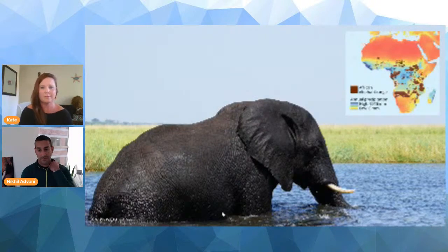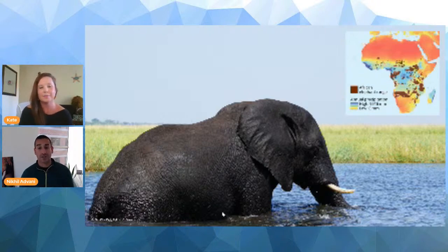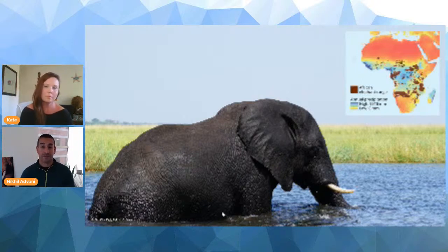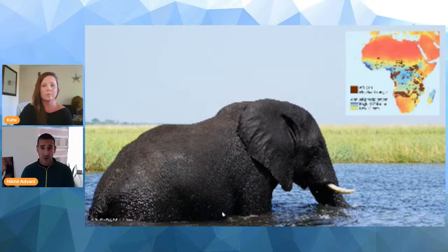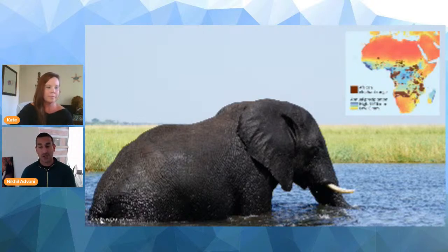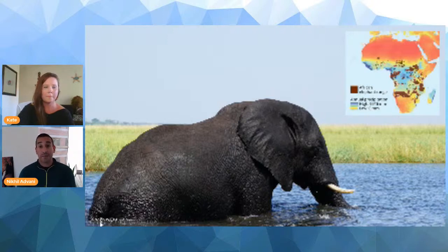Drought is also a problem for species with very high water requirements, like elephants. Elephants need 150 to 300 liters of water a day just for drinking, and when rainfall declines they can actually die from lack of water. They also don't have enough food because the vegetation they eat depends on rain.